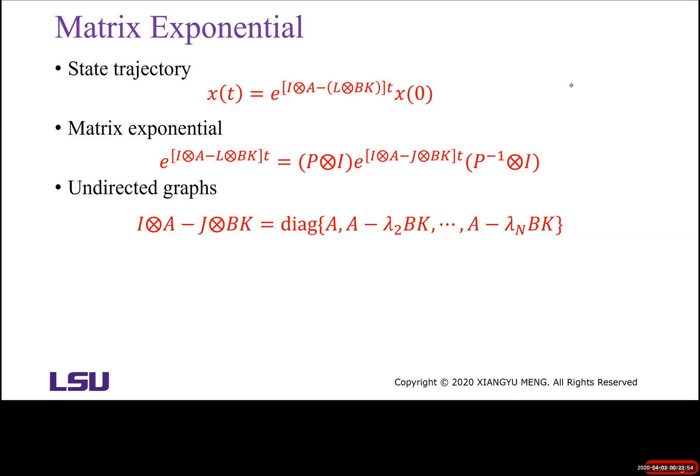In our last lecture, we know the matrix exponential I ⊗ A minus (I ⊗ A minus L ⊗ BK). It is a block diagonal matrix more precisely. So we have the matrix A, A minus lambda 2 BK, through A minus lambda N BK.